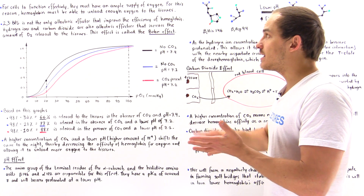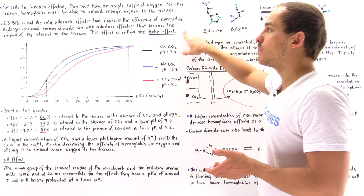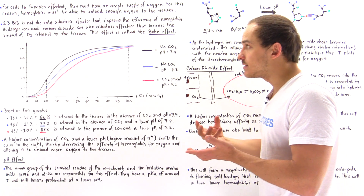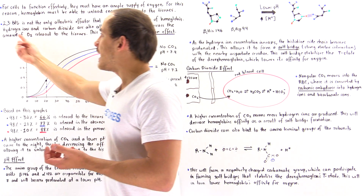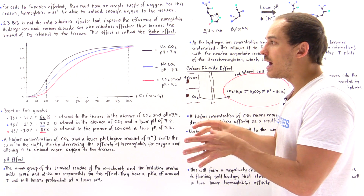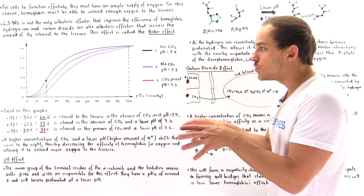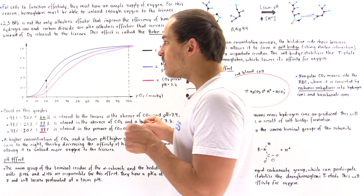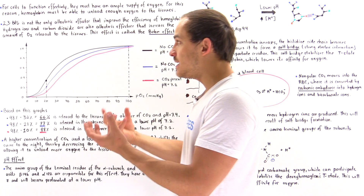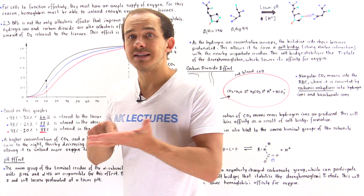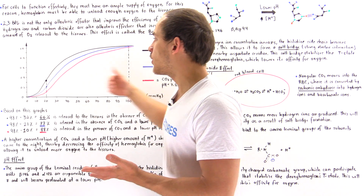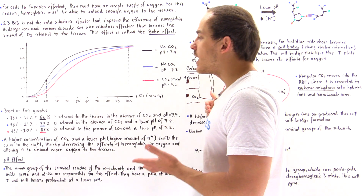This effect is known as the Bohr effect. The Bohr effect is the ability of hydrogen ions and carbon dioxide to bind onto the hemoglobin molecule, stabilizing its T-state and decreasing its affinity for oxygen, thereby shifting the curve to the right side.